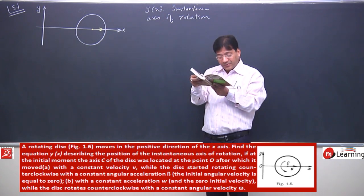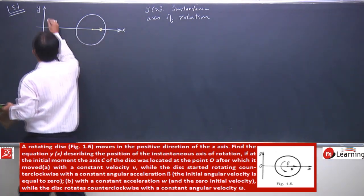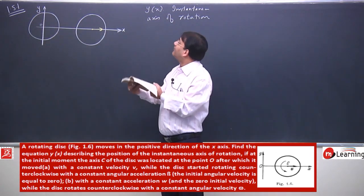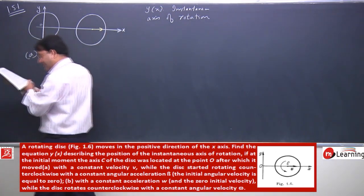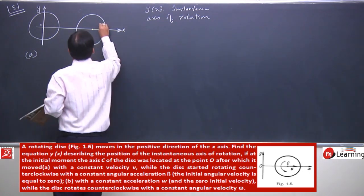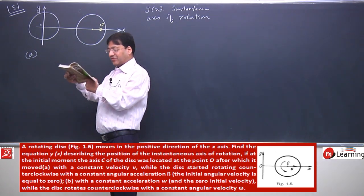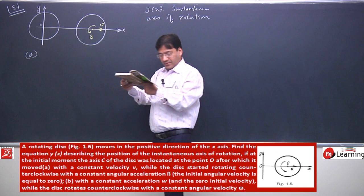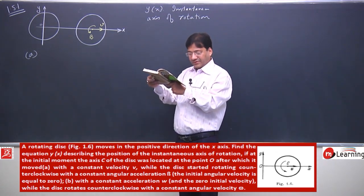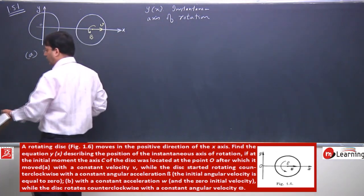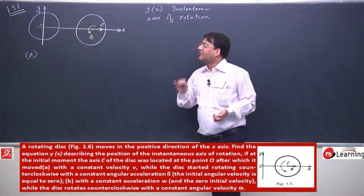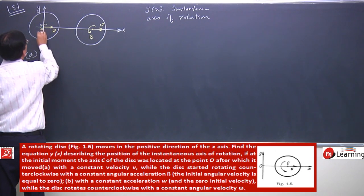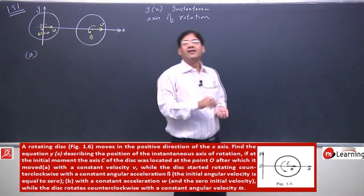In part (a), if at the initial moment the axis of the disc was located at point O, it then moved with constant velocity v and constant angular acceleration β in the counter-clockwise direction. The initial angular velocity is taken to be zero.